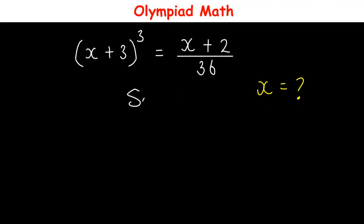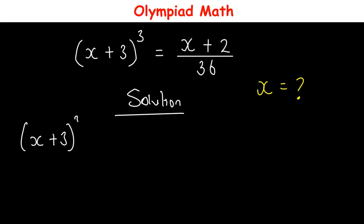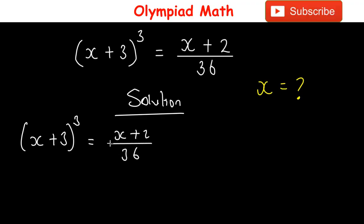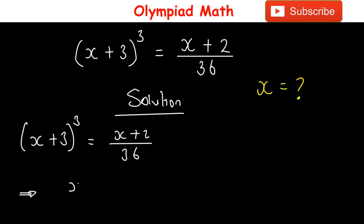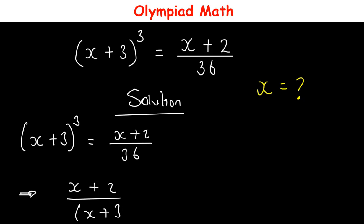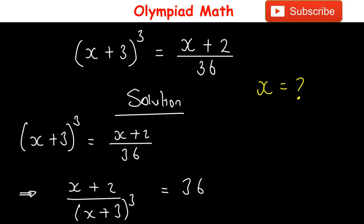To solve this, we have (x+3)³ = (x+2)/36. If we multiply both sides by 36 and then divide by (x+3)³, we are going to get the result as (x+2)/(x+3)³ = 36.